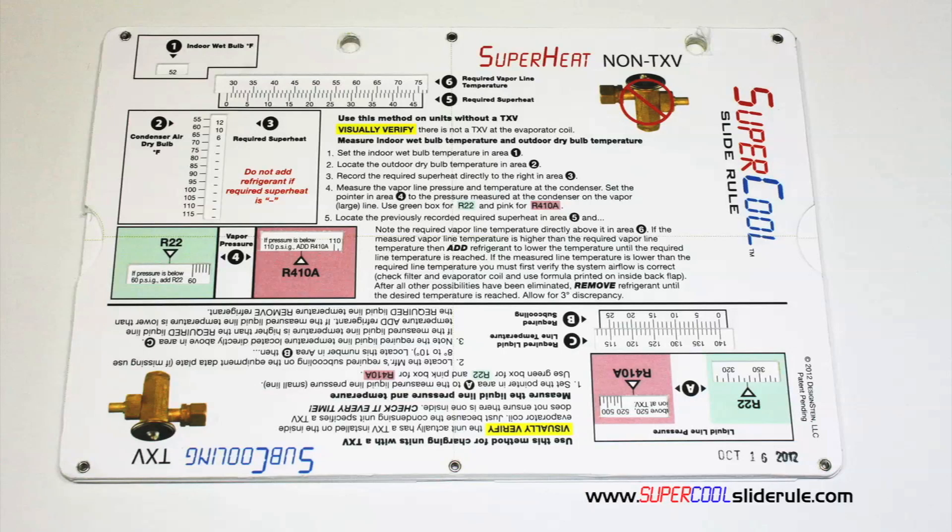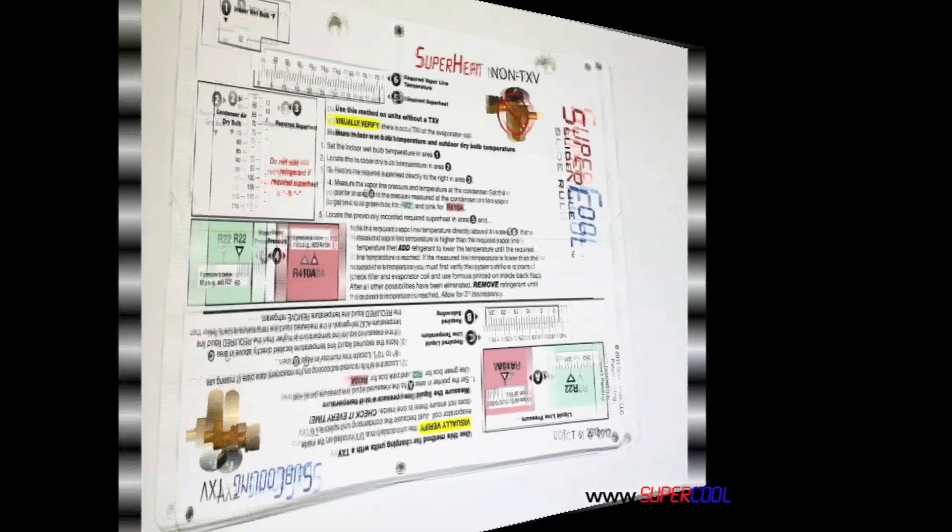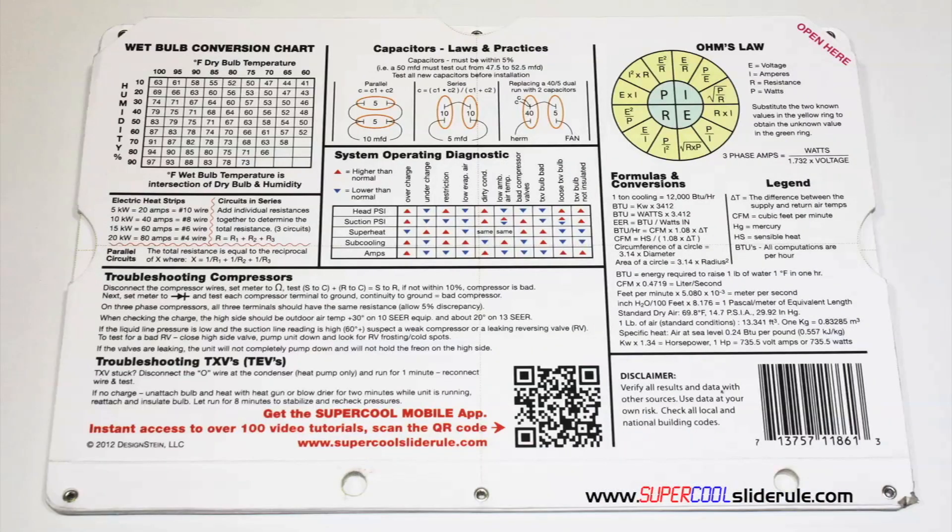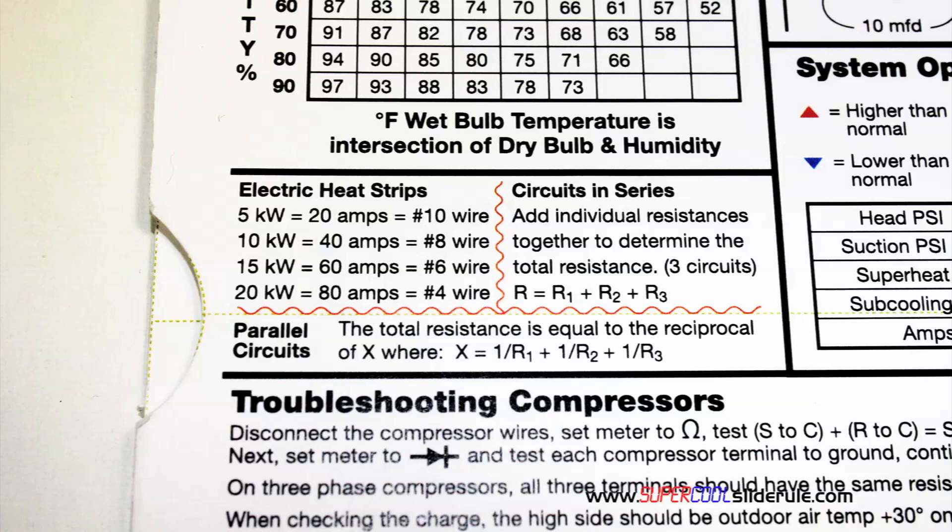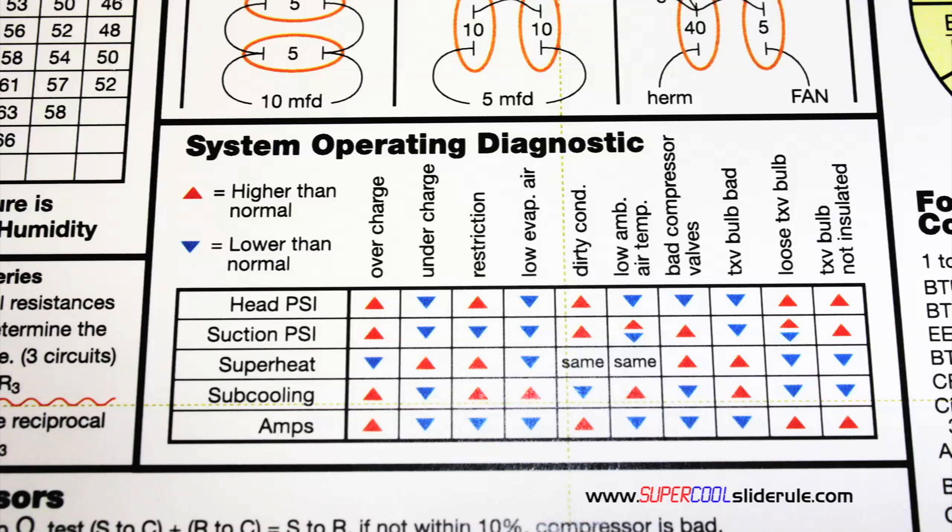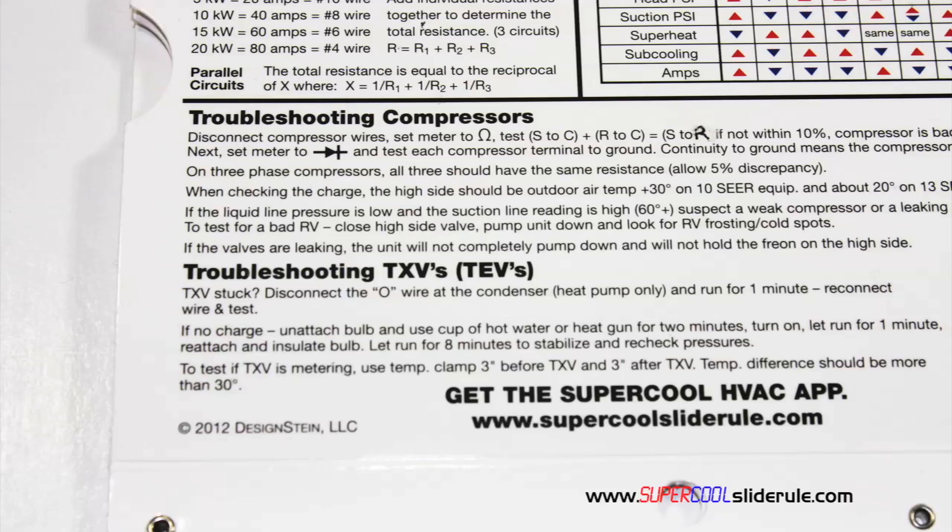This one tool will allow you to charge a system with R22 or R410A in either the superheat or subcooling method. The back cover contains required formulas, it has capacitor rules and practices, a wet bulb conversion chart, how to perform computations on series or parallel circuits, an electric heat strip guide, a complete system troubleshooting diagnostic chart, and how to troubleshoot compressors and TXV.